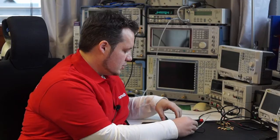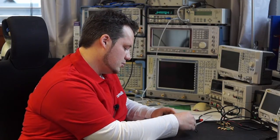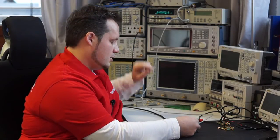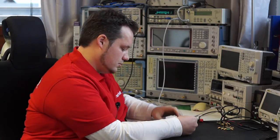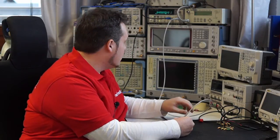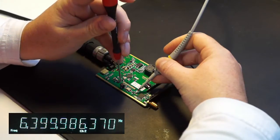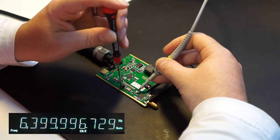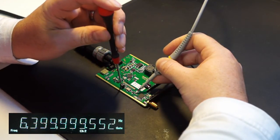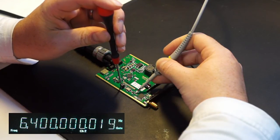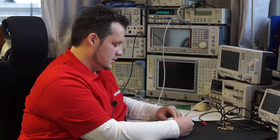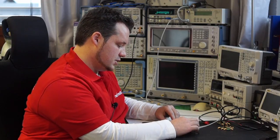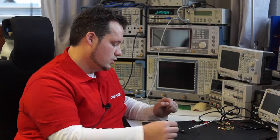We connect the module to a frequency counter. You see up here, this frequency counter is referenced to a rubidium frequency normal. And we fine trim this to 6.4000 MHz. And this gives us a repeatable accuracy of 0.28 ppm.